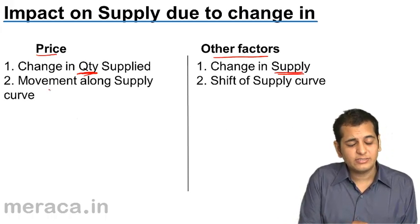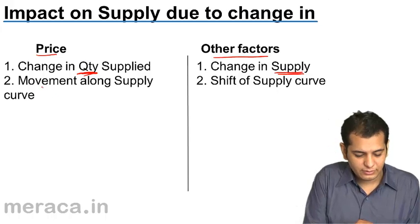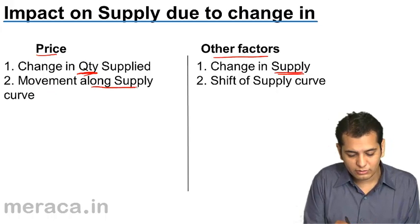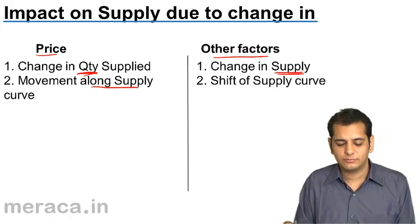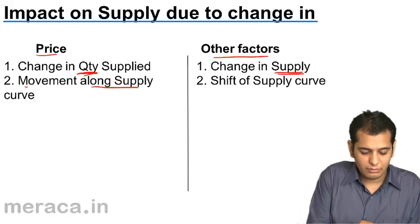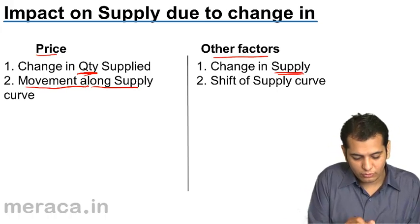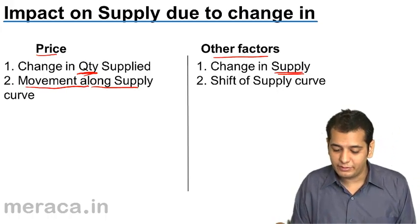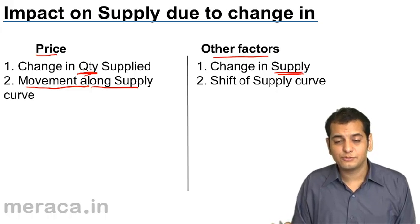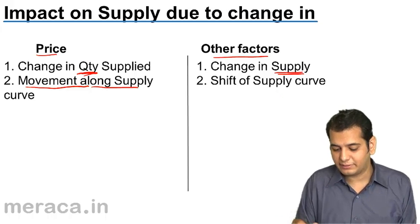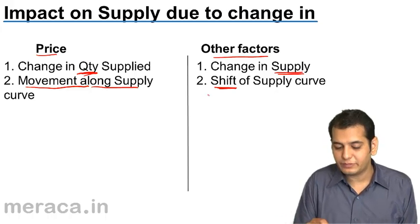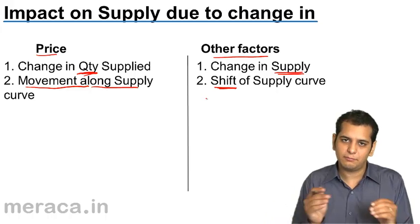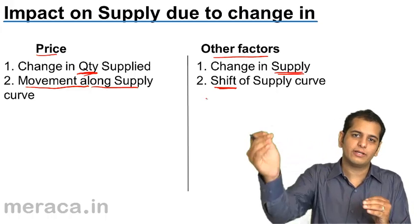When supply changes because of price, we move along the same supply curve. But when supply changes because of other factors, there is a shift in the supply curve — the supply curve altogether shifts.